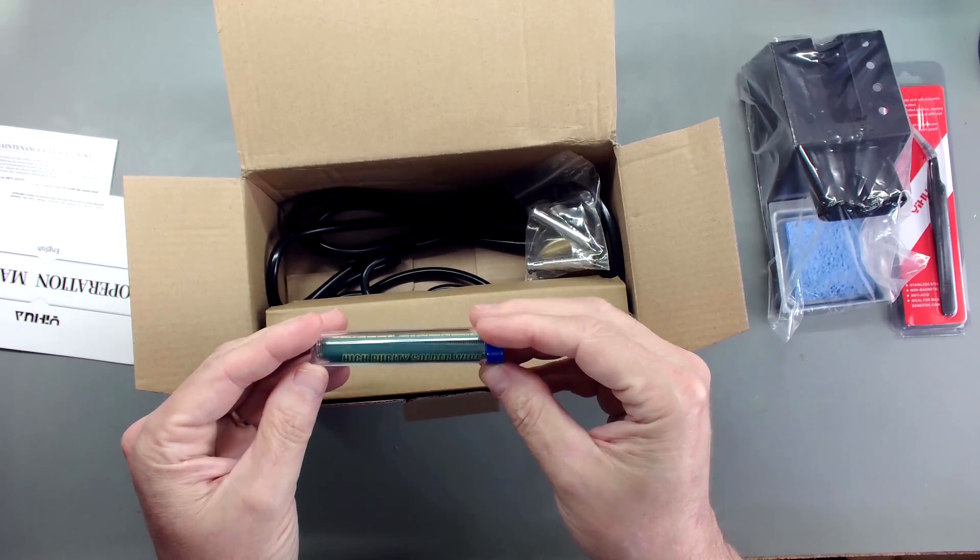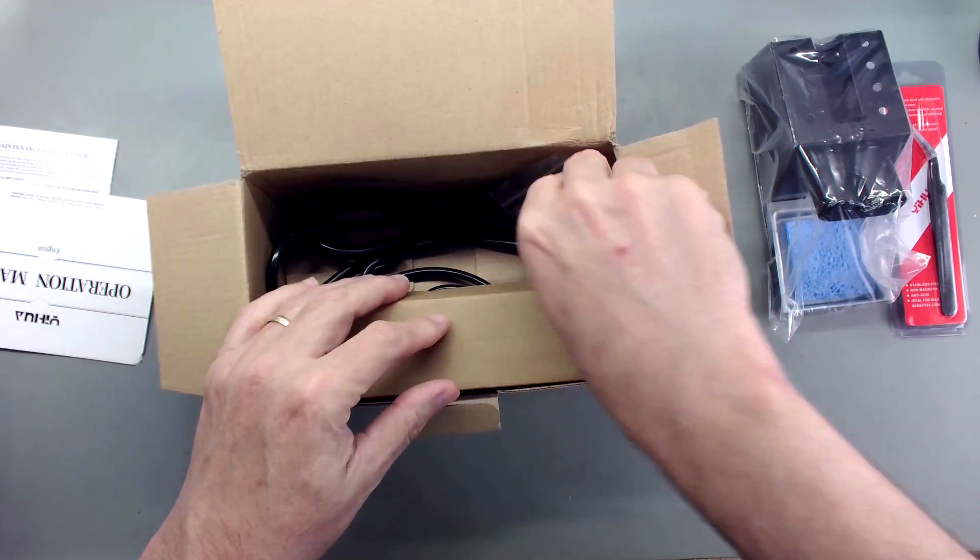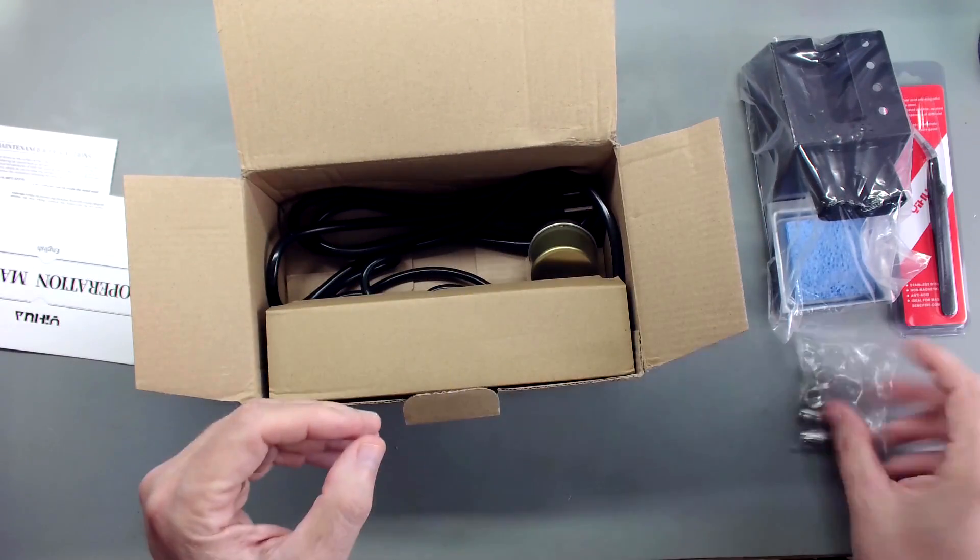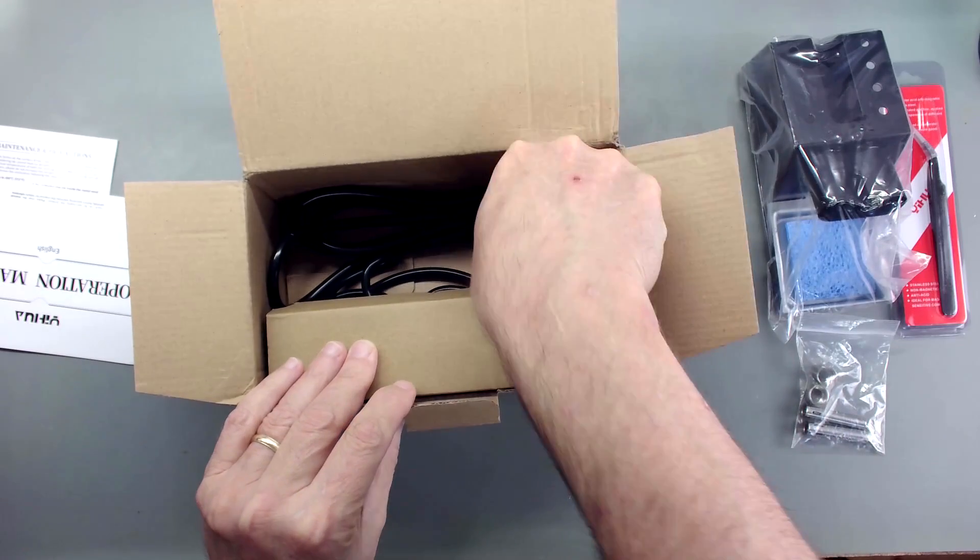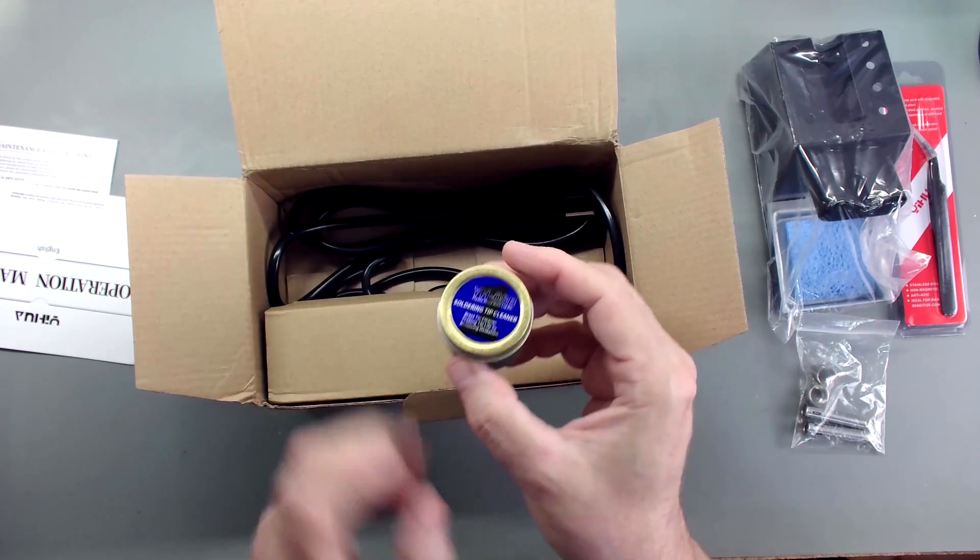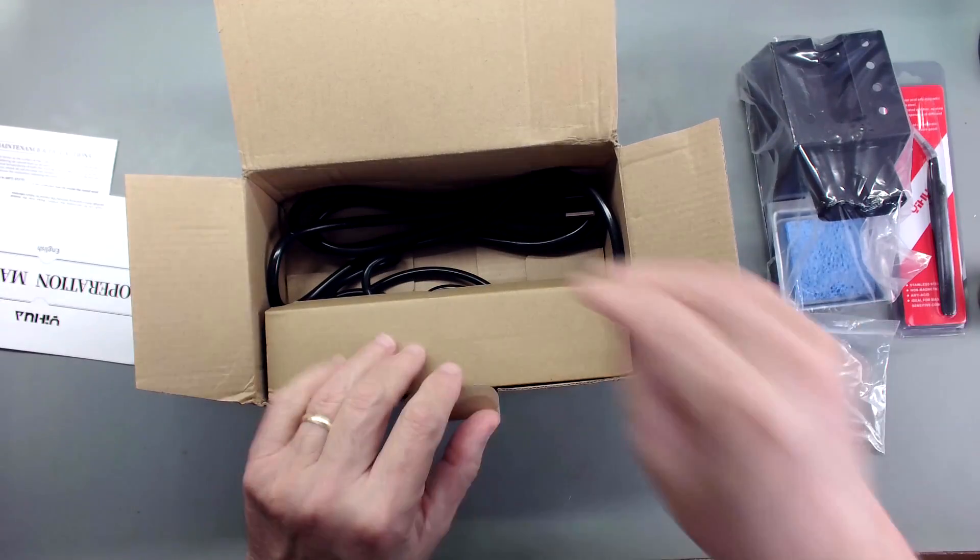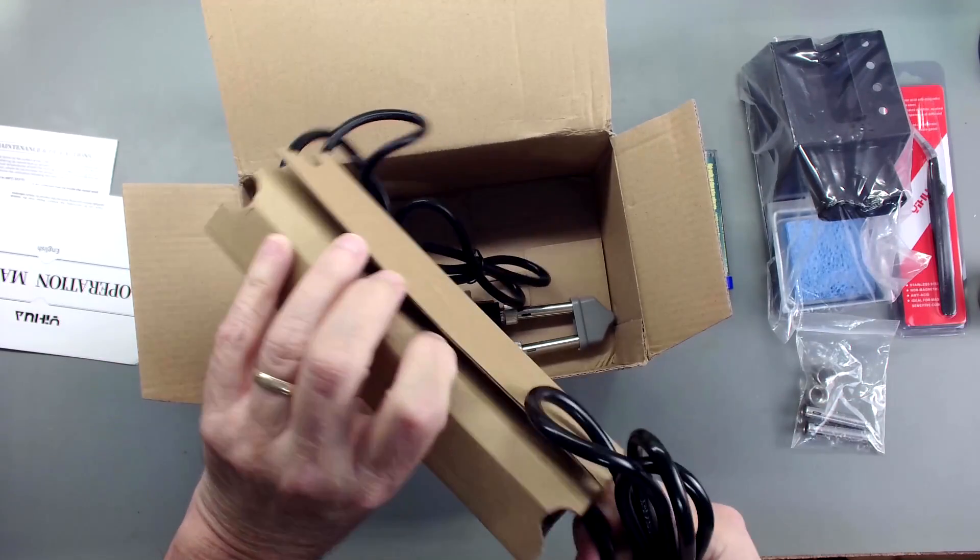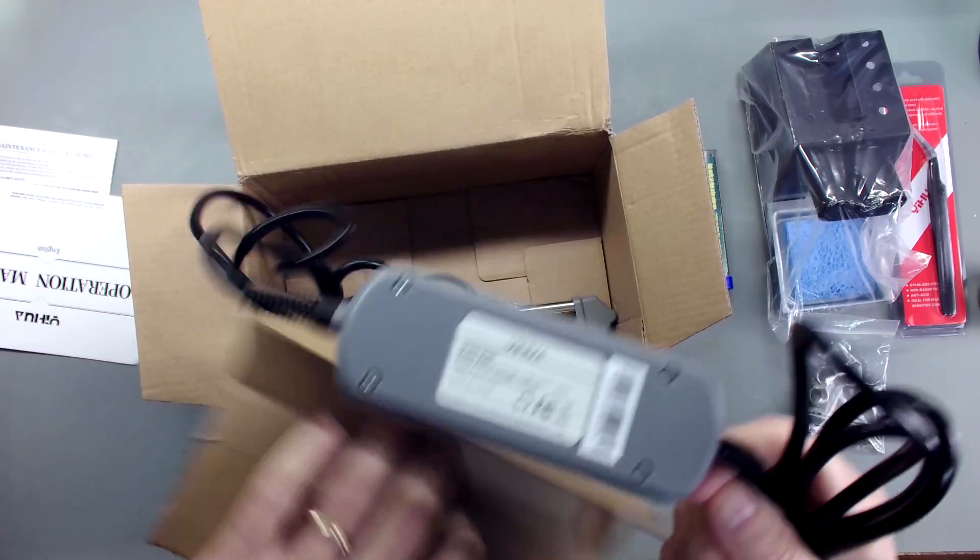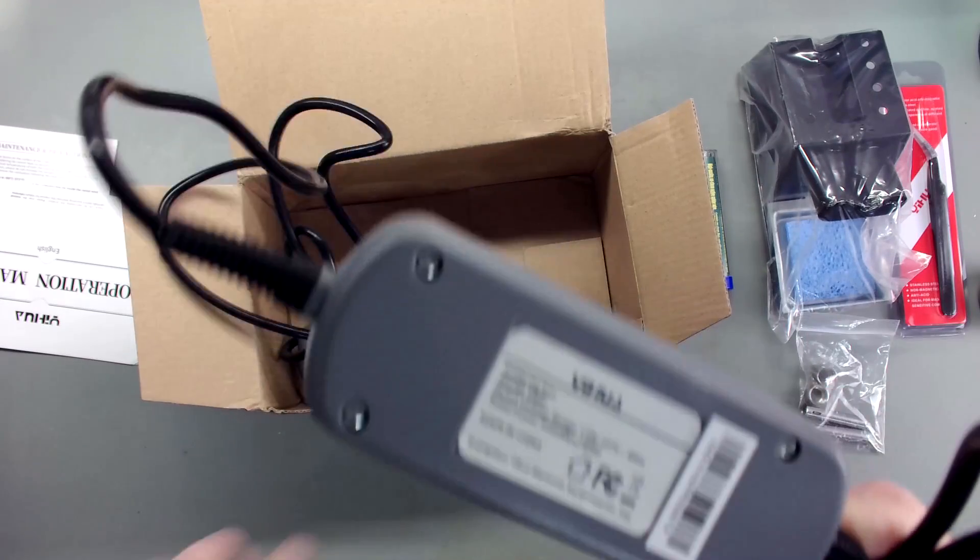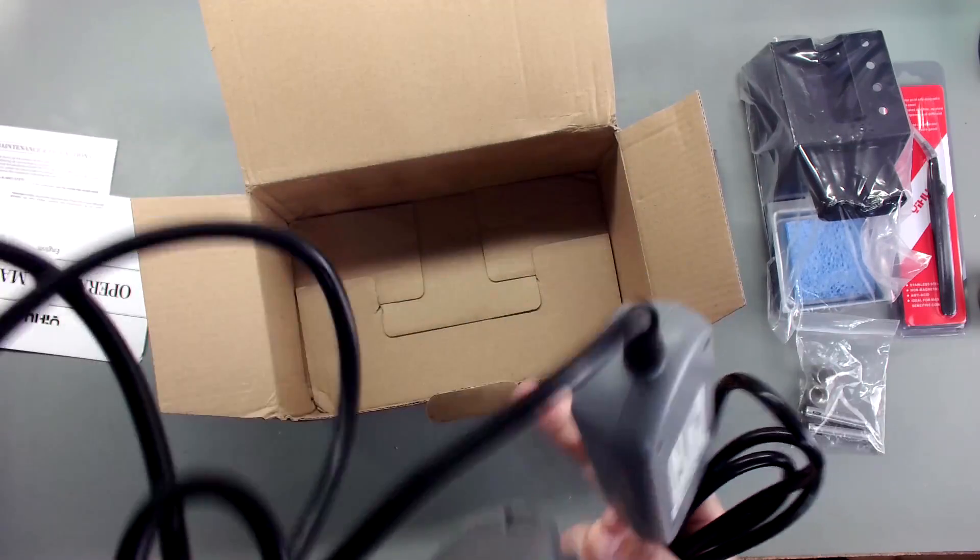Got a little bit of leaded solder. We've got the tips for it. I'm sure some assembly is necessary. We've got a tip cleaner. That's nice. And we've got our power cord control box and there's the head of it.